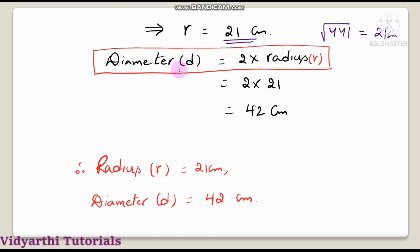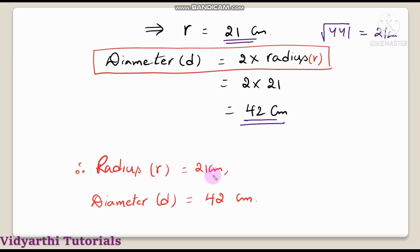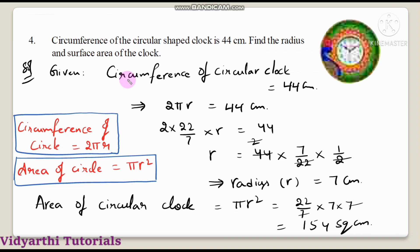To find diameter, use the formula diameter d is equal to 2r. So diameter is 2 into 21, which is 42 centimeters. Therefore radius r is equal to 21 centimeters and diameter d is equal to 42 centimeters. Understood, children?